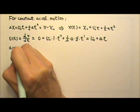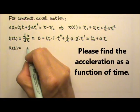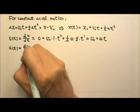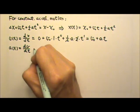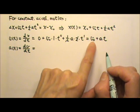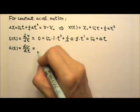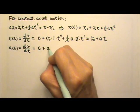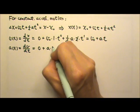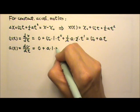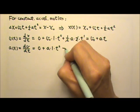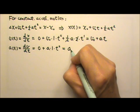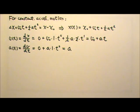If I want to find the acceleration as a function of time, I have to take the time derivative of the velocity. V₀ is a constant, so its derivative is zero. Acceleration is a constant, so we keep it, and t to the first gives 1 times t to the zeroth. So this gives us a equals a, which is a constant — confirming constant acceleration motion.